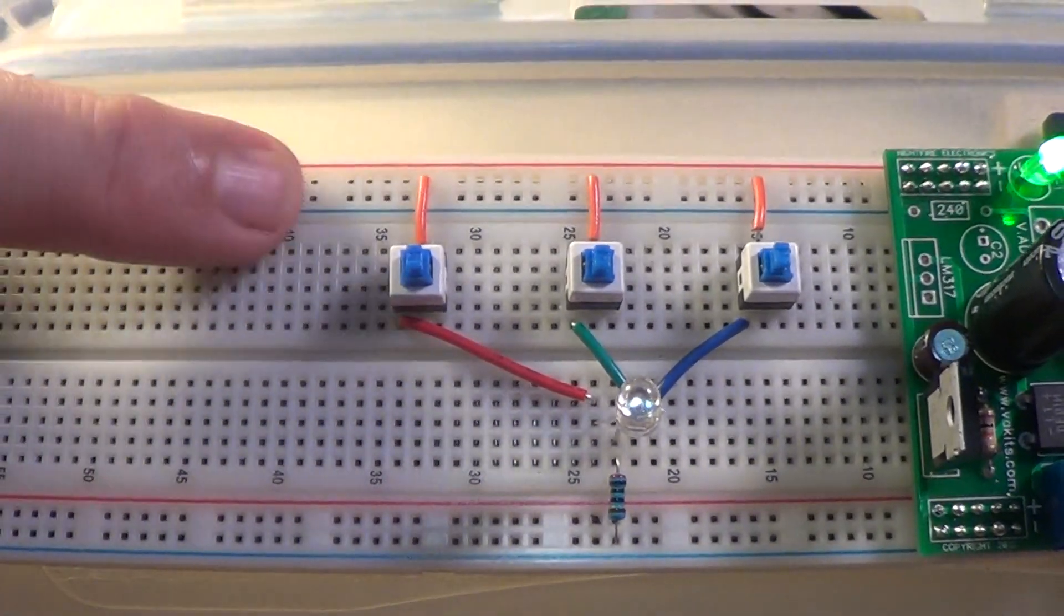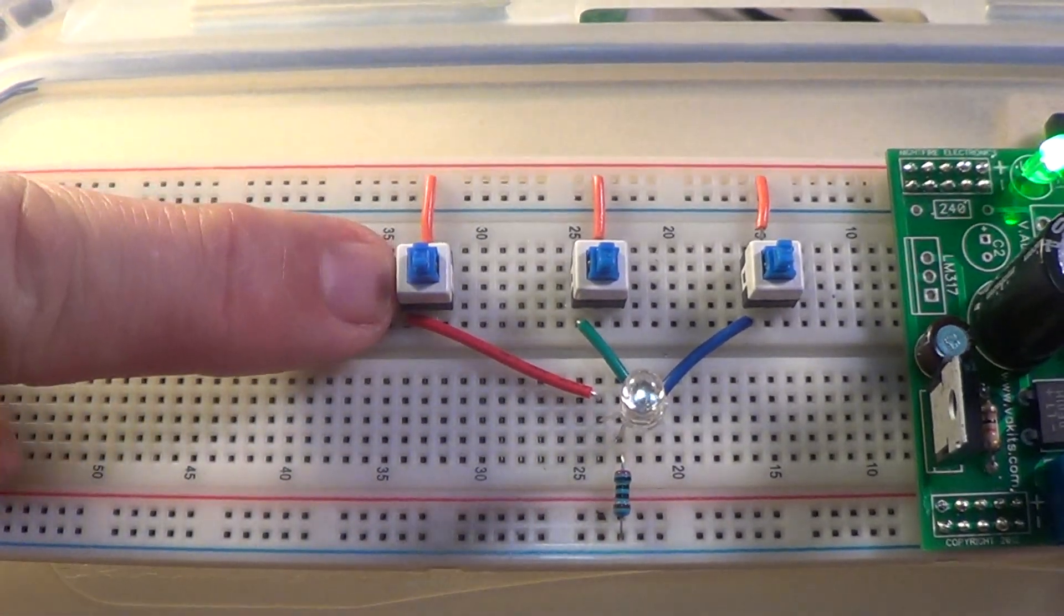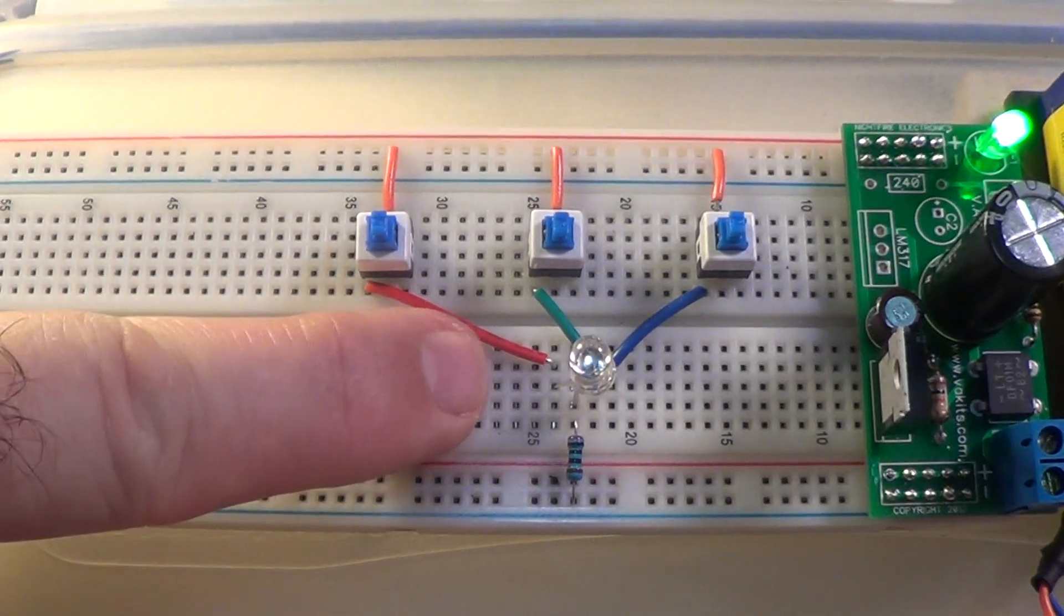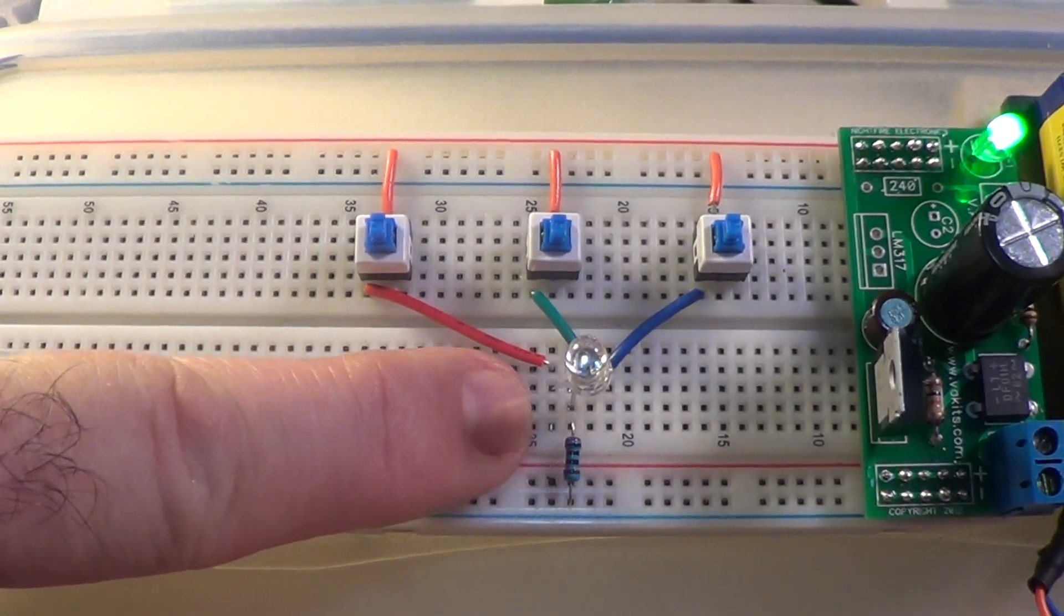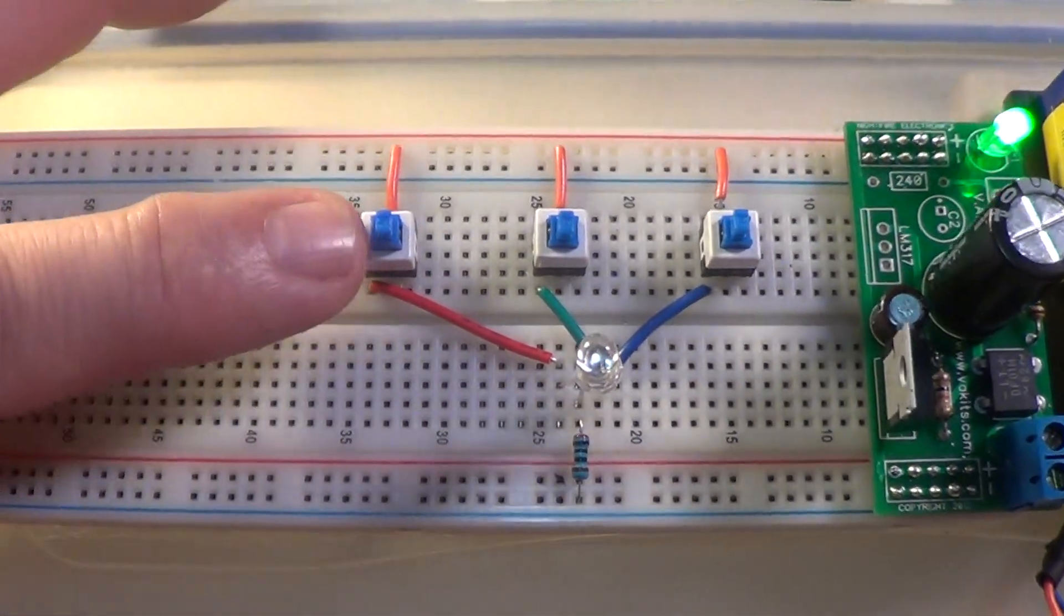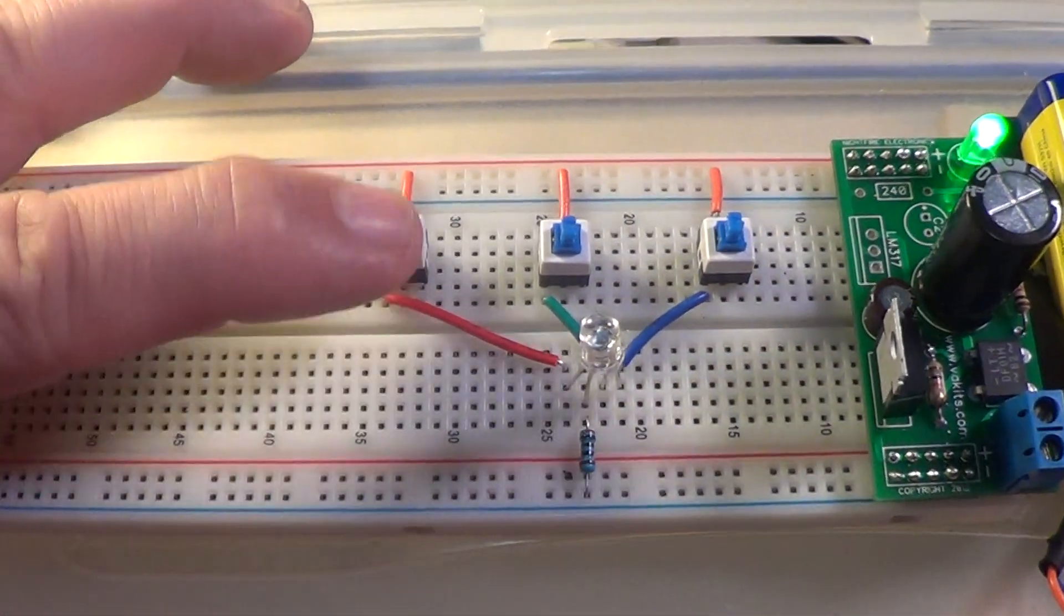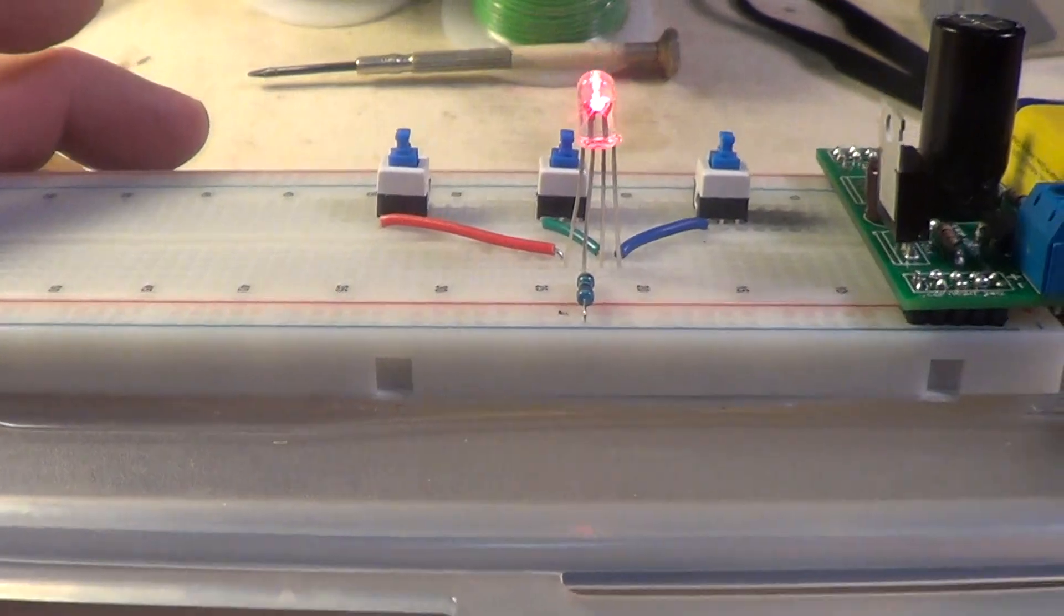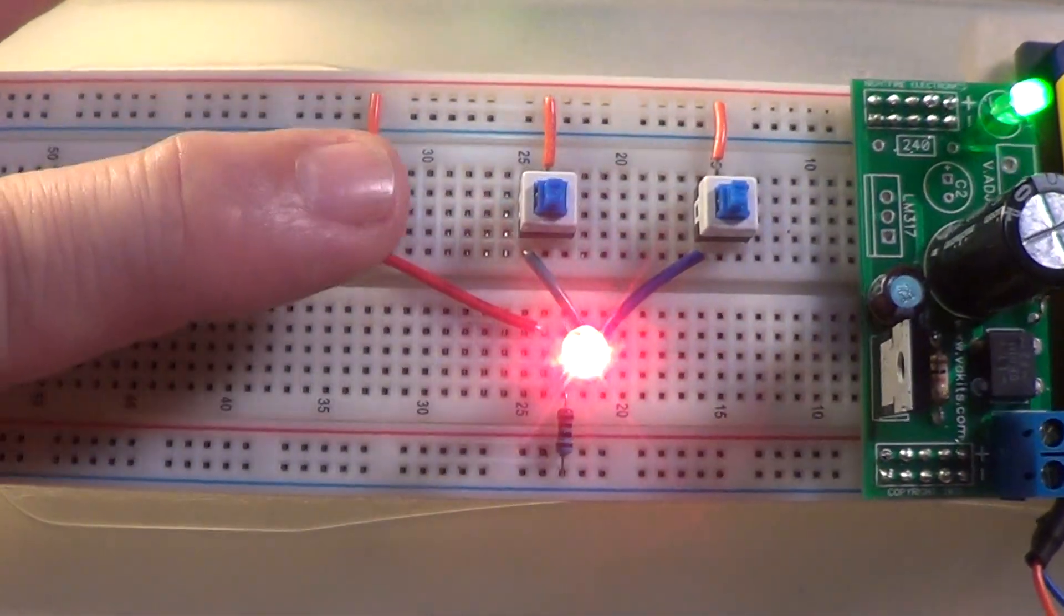I've got power going from this red line to the switch to the red light through a 200 ohm resistor right here. Let's see if this red light works. Okay, there's the red light. That's on.